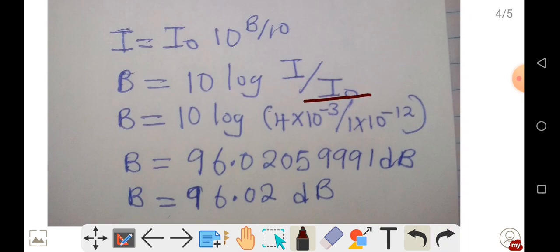I₀ is the threshold of hearing, which is 1.0 times 10 to the power negative 12. The intensity we found was 4 times 10 to the power negative 3, which we have substituted here. The threshold of hearing is 1 times 10 to the power negative 12, which we have substituted here.